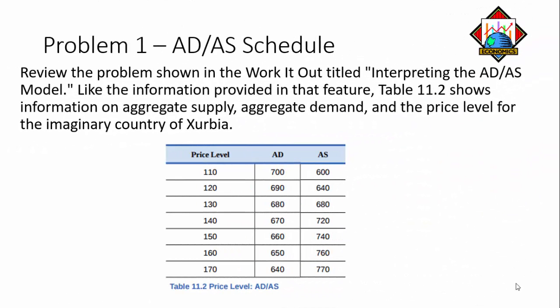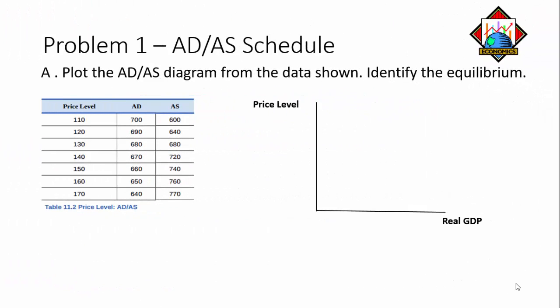Problem one: review the problem shown in the workout titled 'Interpreting the Aggregate Demand Aggregate Supply Model.' Table 11.2 shows information on aggregate supply, aggregate demand, and the price level for the imaginary country of Zerbia. The first thing we need to do is plot the aggregate demand and aggregate supply diagram from the data shown, and then identify the equilibrium.